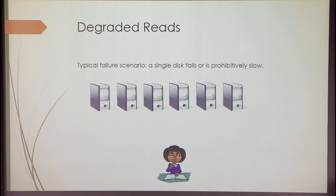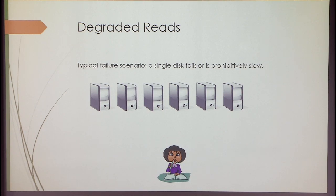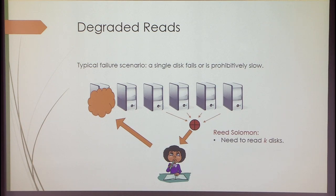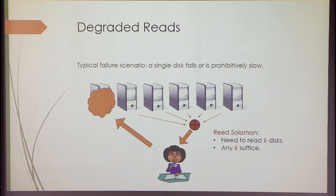Let me say a bit more about typical failure scenarios. The most important is called a degraded read: somebody requests their data and that particular machine is either failed, slow, or down for an upgrade. If you were doing replication, you could just direct the request somewhere else. If you're using erasure coding like Reed-Solomon, there's more work: you read k other disks, compute a linear combination, and serve that to the user. With Reed-Solomon, since any k disks suffice, you'd try reading all available disks, and use the first k that respond. These kinds of reads are called degraded reads.